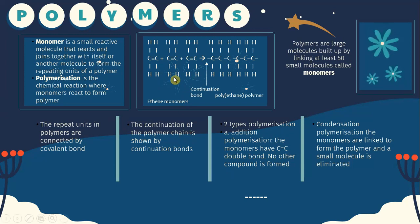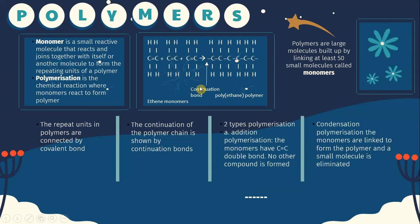You can see double bond plus double bond plus double bond joining to form the polyethene polymer. In between there is a continuation of bonds. The repeat units in the polymer are connected by covalent bonds, and the continuation of the polymer chain is shown by continuation bonds.